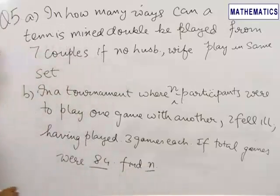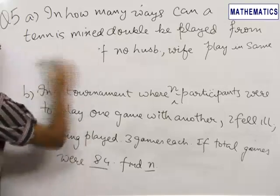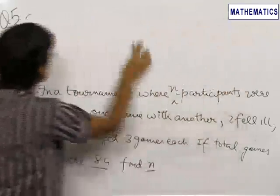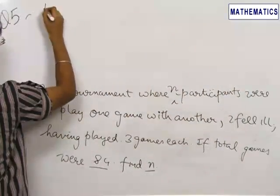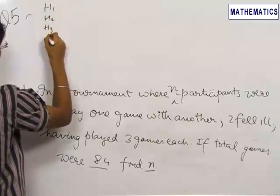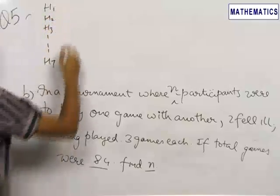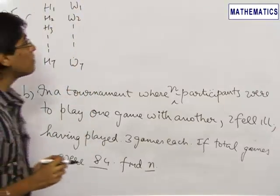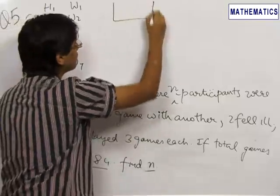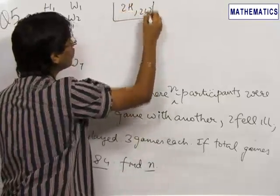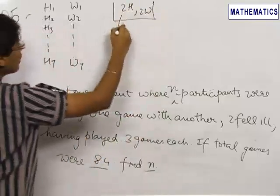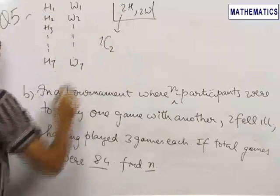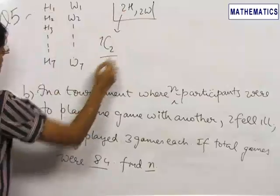Now let us start with the first problem. There are seven couples and we want to play a mixed double match. So let us represent the husbands by H1, H2, H3 up till H7 and wives by W1, W2 up till W7. Now in a mixed double tennis game, there are two husbands involved and two wives involved. So let us select two husbands in 7C2 ways. There are seven husbands out of which two are required in our game.